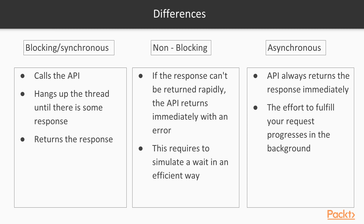To avoid manual polling in a tight loop, asynchronous means that the API always returns immediately, having started a background effort to fulfill your request. So there must be some related way to obtain the result. We're going to learn more about Mio and how it works as an asynchronous IO in Rust. In this video, we learned the difference between blocking and non-blocking IOs.